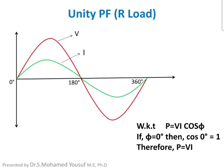We know that power in an AC circuit is equal to V·I·cos(φ), where φ is the phase angle between the voltage and current. In this waveform the phase angle is 0°, so cos(0°) = 1, and the equation becomes P = V·I. This means the total input power is transferred to the load in the case of a resistive load.